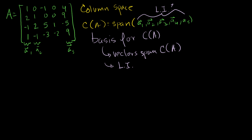Let's put the matrix in reduced row echelon form. Keep the first row the same: 1, 0, -1, 0, 4. Then replace the second row with the second row minus 2 times the first row. So: 2 minus 2 times 1 is 0; 1 minus 2 times 0 is 1; 0 minus 2 times -1 is 2; 0 minus 2 times 0 is 0; and 9 minus 2 times 4 is 1.